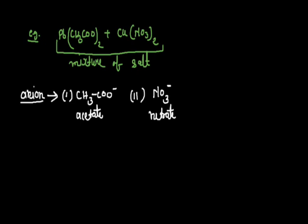Now I will talk about cation. So mixture of these two salts contain cations, Pb2+ or lead 2+ and the second is copper 2+. So this is called the mixture of salt.